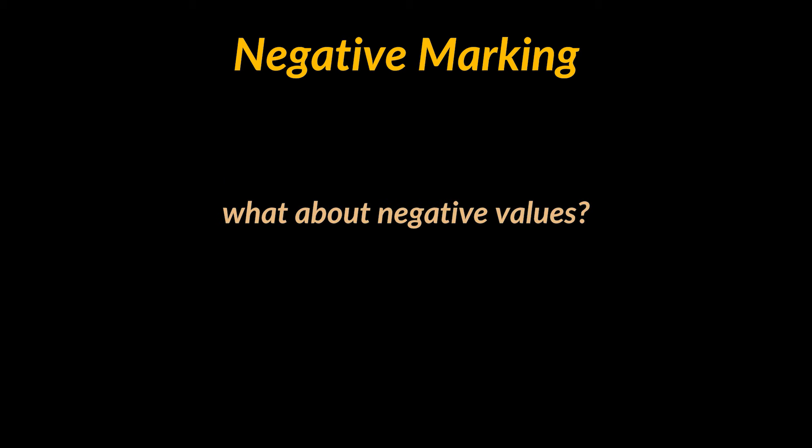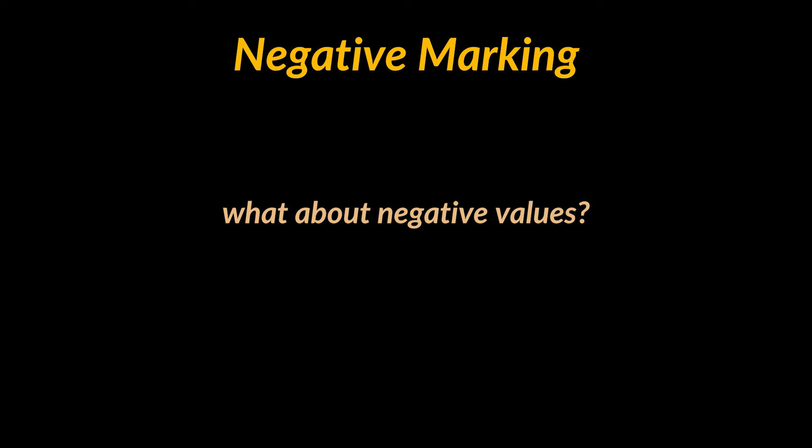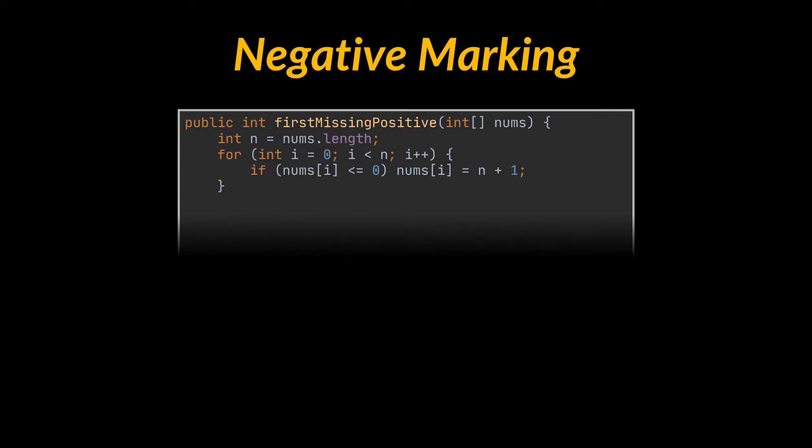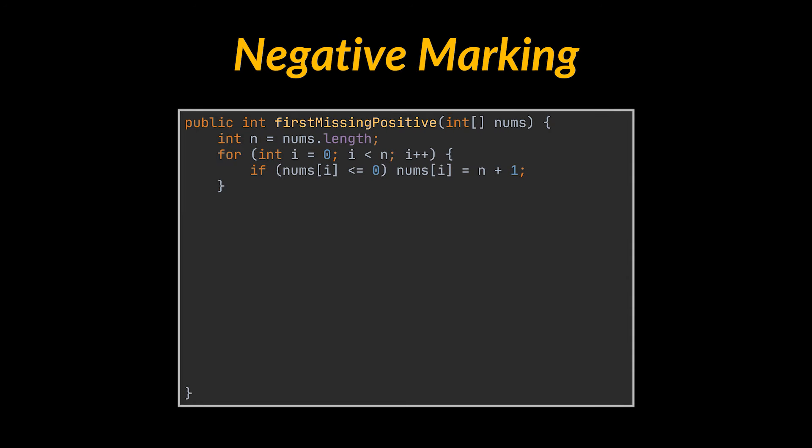But here you are going to say, wait, how are we going to apply this if the array contains negative values? To do that, we will have to make a first pass on the array and override negative values with something else. We don't care what these values are, they are just useless to us and do not contribute to the answer we are looking for.